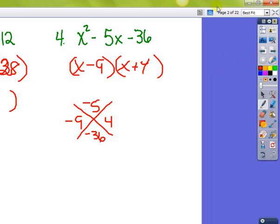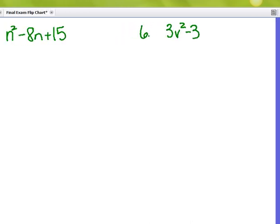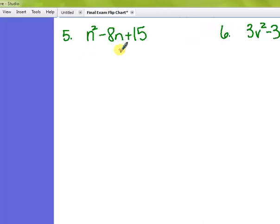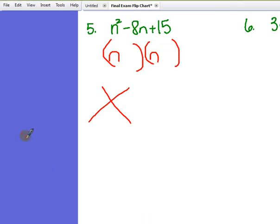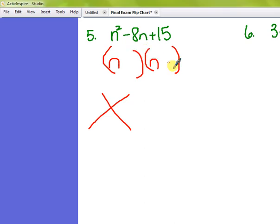Let's move on to a few more factoring questions. Another one. Check for GCF. Not there. So let's set it up. It's pretty plain to see that to get n squared, you have to have an n in the first position. We need to get 15. These two have to multiply out to equal 15, and we want them to add up to negative 8.